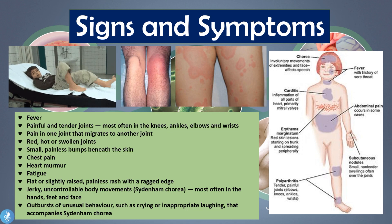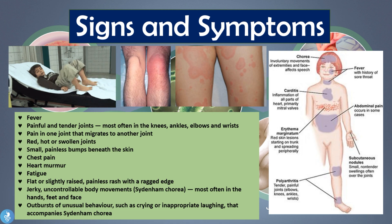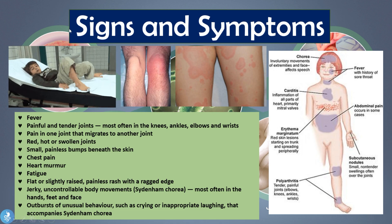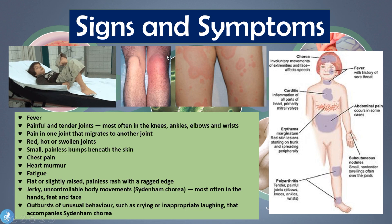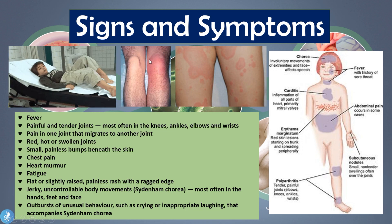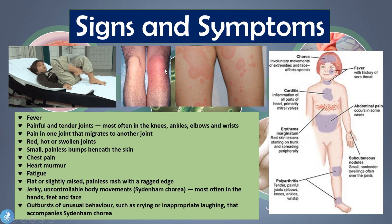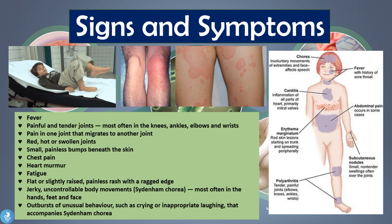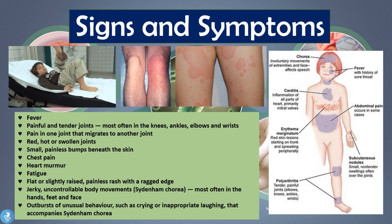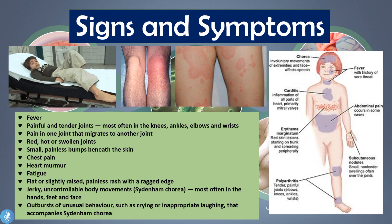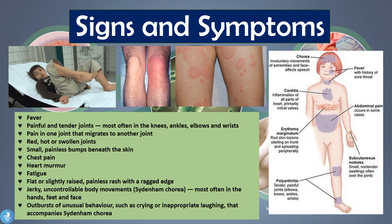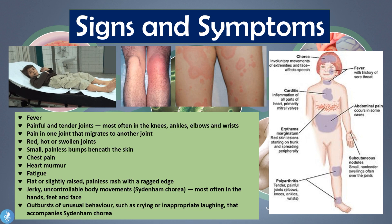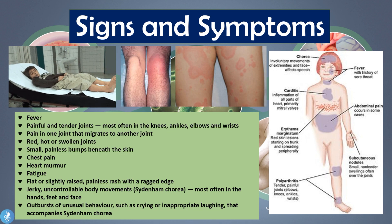The signs and symptoms of rheumatic fever include fever, painful and tender joints — most often the knees, ankles, elbows, and wrists — which appear red, inflamed, hot, and cause pain and loss of function. Pain in one joint can often migrate to another joint, and the joints can be red, hot, and swollen.